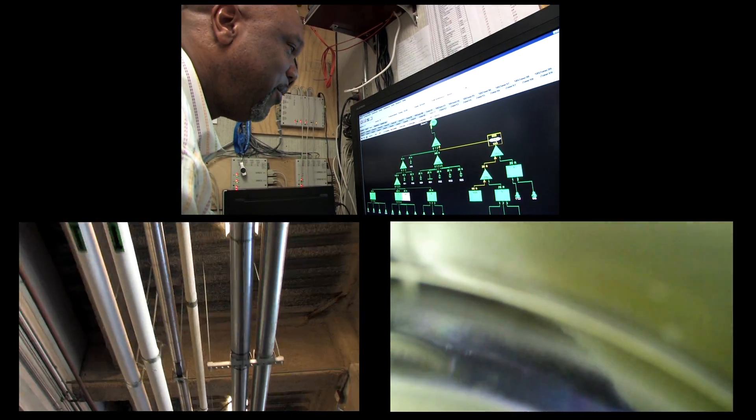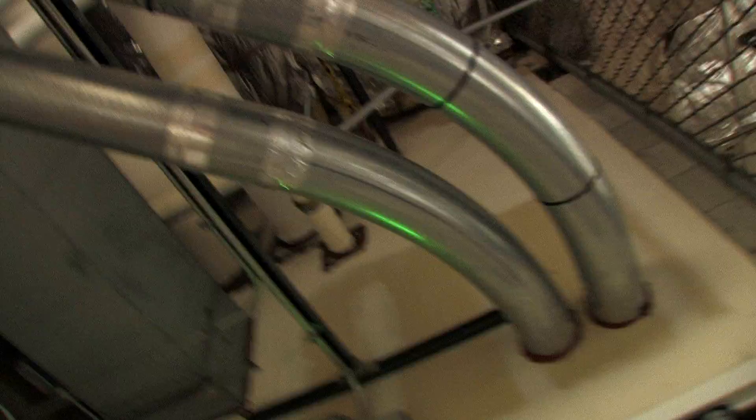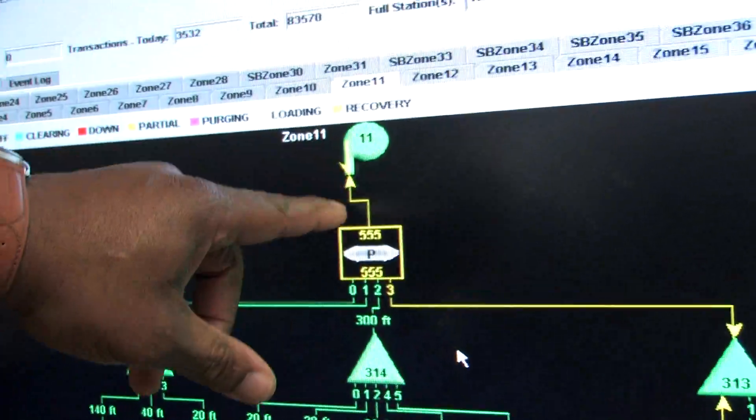We're watching the travel of the carrier. It's going up, it's going to the penthouse right now through this path here. When it passes this transfer unit, now it's at the top level. Now here it comes, coming back, taking this path back to this station which is 555.